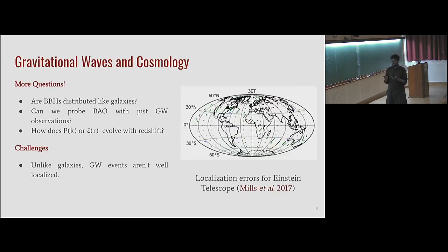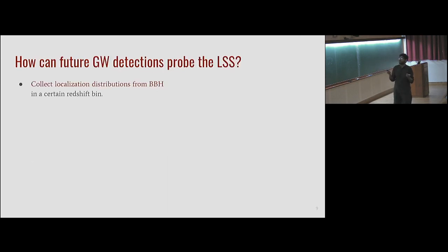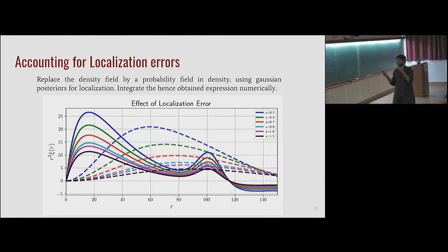So then what we do is we have to deal with this localization error. We collect the localization distributions in a certain way, estimate the correlation function using the estimator that I mentioned, and compare this estimation with some analytical expectations, which will not be the same as your normal expectation. For example, I want you to concentrate on the red curve, which is the correlation function expected from theory at z equal to 0.7. As you can see, there's a clear baryon acoustic peak at around 100 megaparsecs. But when you put in the localization errors due to the gravitational waves, you see that this peak is just washed away and you have something like this. So we have to deal with it. This is the only thing that we can measure with most gravitational wave observations—we won't be able to measure the baryon acoustic peak.